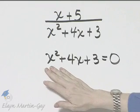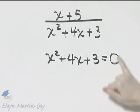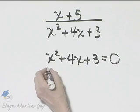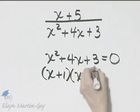Notice it's a quadratic equation. I'll solve it by setting it in standard form. That means zero on one side. And then I'll factor the left side. That factors as x plus one times x plus three.